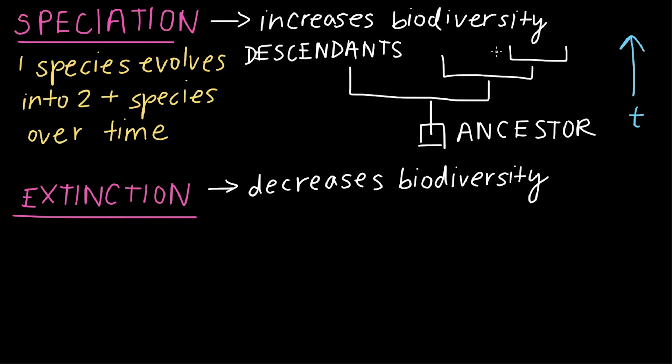And it's speciation events like these that have led to the biodiversity that we see on Earth today. On the flip side, we have extinction, which causes biodiversity to decrease.